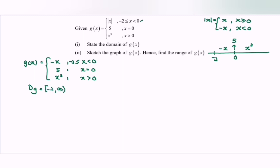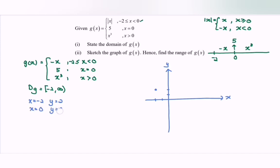Next, sketch the graph of g(x) and find the range. On the xy-axis, we have the points negative 1 and negative 2 marked. Substituting x equals negative 2, the value of y equals 2, giving the point (−2, 2). Substituting x equals 0 into the negative x piece gives y equals 0, but this is an open circle. For x exactly equal to 0, y equals 5, so we have a filled circle at (0, 5). The segment for x in [−2, 0) is a straight line. For x greater than 0 we have the cubic curve x³.